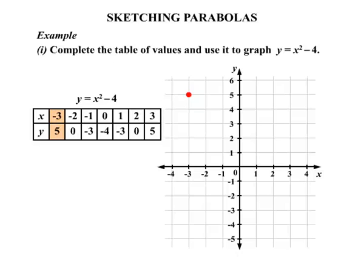So that is -3 across, then 5 up. Our next pair, (-2, 0). There it is. (-1, -3). (0, -4). (1, -3). (2, 0). And finally, (3, 5).